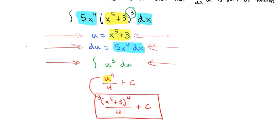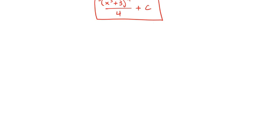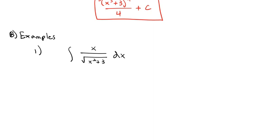Let's take a look at a few examples. First, we're going to find the integral of x divided by the square root of (x² + 3) dx. We don't really have any familiar antiderivative for that, so we try u substitution, looking for u to be the inside stuff. Inside the radical we have x² + 3, which can become our u. Then du is the derivative of u: 2x dx.